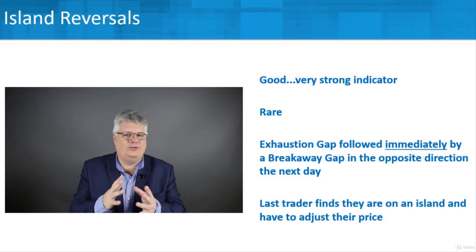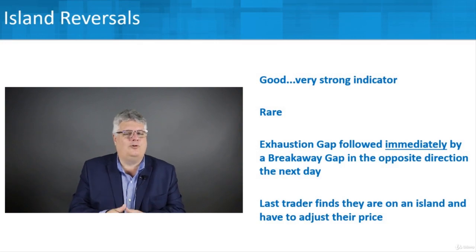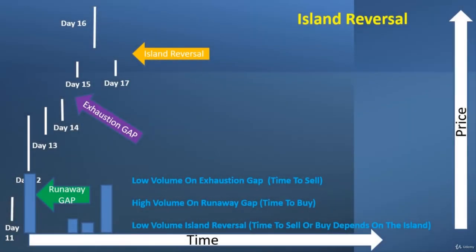Let's take a look at these island reversals and how to recognize them in a more understandable graphic manner. To identify island reversals, you're going to need an exhaustion gap. From day 14 to day 15, we're looking at an exhaustion gap. We saw that our volume was not going up — it actually went down between day 14 and 15. We know we're running out of steam. Then you'll start seeing overlapping bars, maybe going sideways or down, and the trend has basically been broken — it's not trending upward anymore.